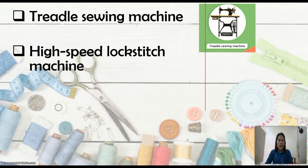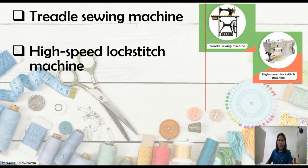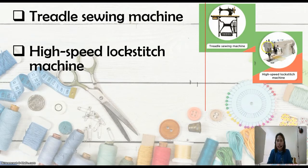The second one is the high speed lock stitch machine. It is a self-oiling lock stitch machine used in clothing industries. It has an oil tank where the oil is stored under its bed. It works faster and is less tiring. There is a part where the oil is placed — depending on the sewing machine, the oil tank may be located in different positions.